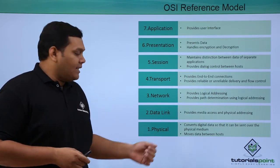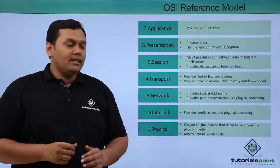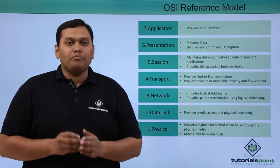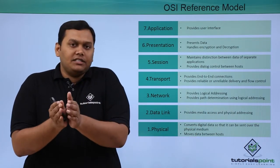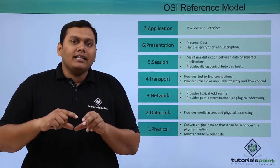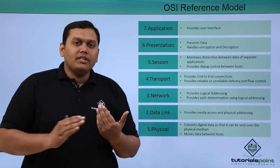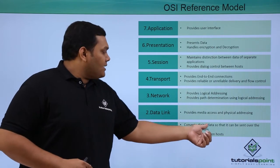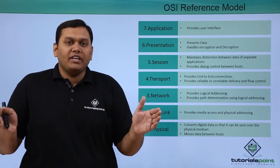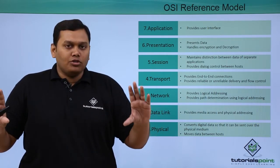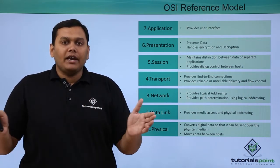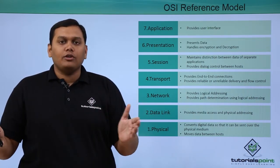The first one is the physical layer. What does this physical layer do? It converts digital data so that it can be sent over a physical medium, such as an Ethernet channel. Through the Ethernet channel, the digital data is sent over the physical medium and moves data between hosts. The Ethernet channel acts as a physical medium and data is communicated or transferred from host A to host B.